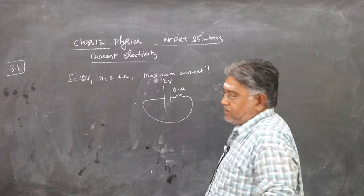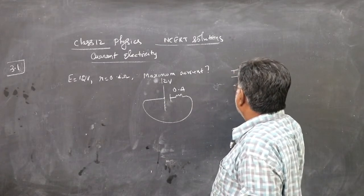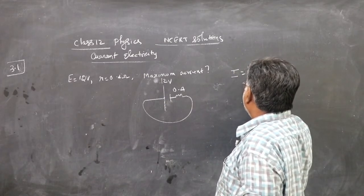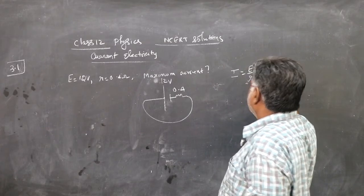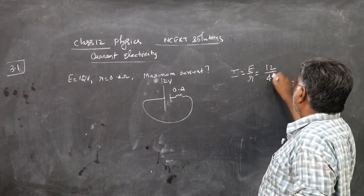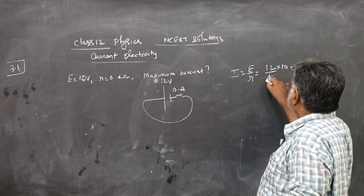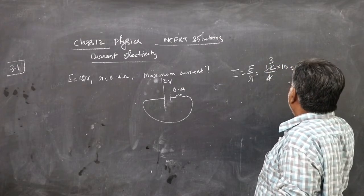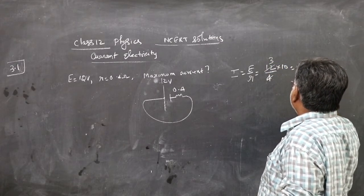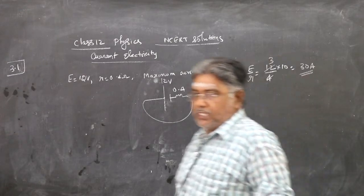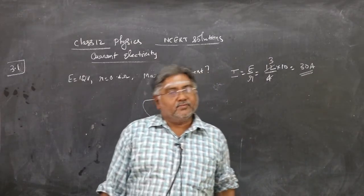So, current is required, maximum current. I is E by R, E is 12, R is 0.4, which is 12 by 0.4, you take as 4 by 10, that's 30. So, 30 ampere current can be drawn. That is the maximum current possible.